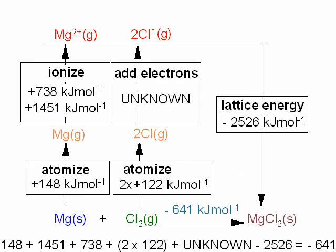Putting the data onto a Born-Haber cycle gives you this diagram. We have magnesium reacting with chlorine to give magnesium chloride, and the formation enthalpy was given in the question. This is the formation enthalpy of magnesium chloride forming from its elements.